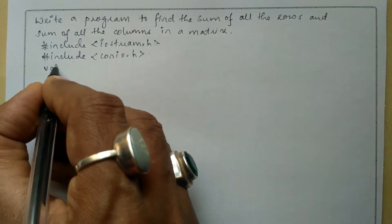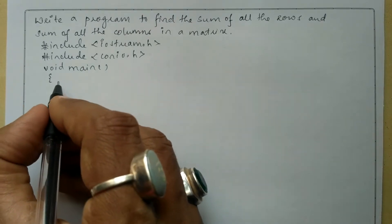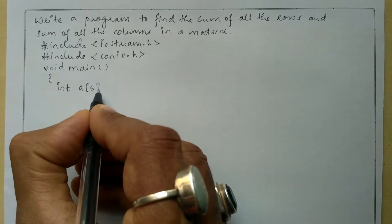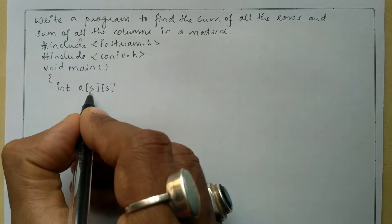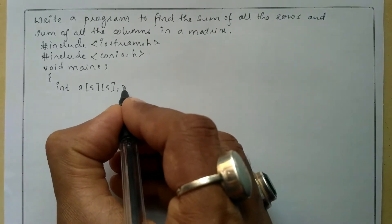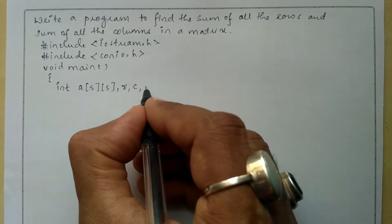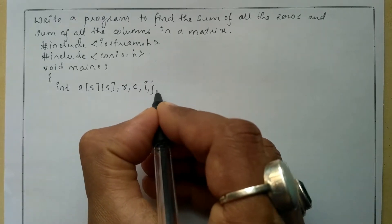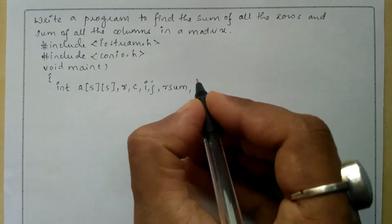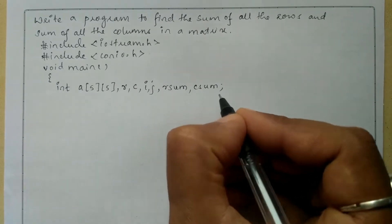Now let us write the void main function with a curly open brace. In the declaration section I am going to declare a two-dimensional array of type integer: a of 5,5 — the first index always represents a row and the second index always represents a column. Next, I am going to declare row and column variables r and c, indices i and j, r_sum which is used for row sum, and c_sum which is used for column sum.